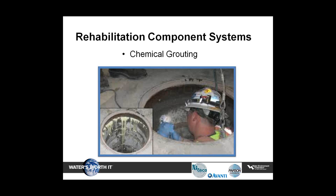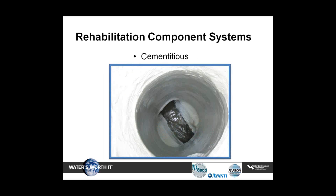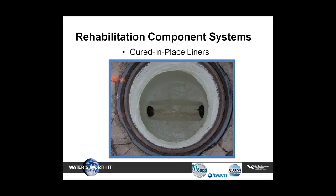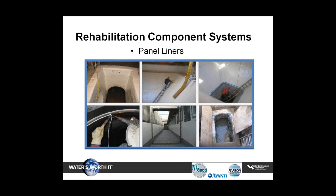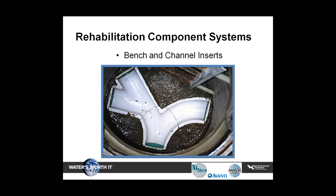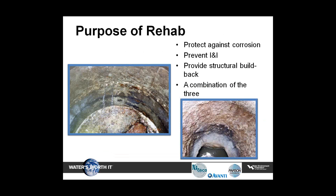The rehabilitation of manholes can be complicated and the selection of the correct product or technology can at times be confusing. The following manhole rehabilitation components are covered in the specification and in this webinar: chemical grouting, cementitious manhole restoration, polymers such as epoxies, polyurethanes, and polyureas, cured-in-place liners, panel liners, chimney seals, and bench and channel inserts. The purpose of manhole rehabilitation is to protect the manhole structure against corrosion, seal it from I&I, rebuild it structurally, or a combination of all three.